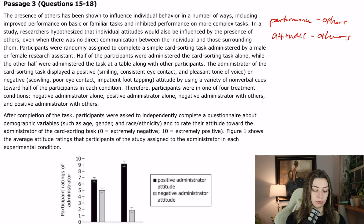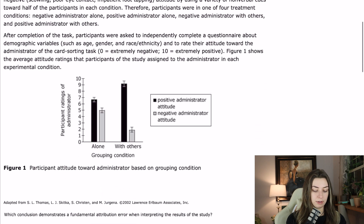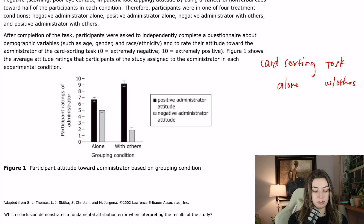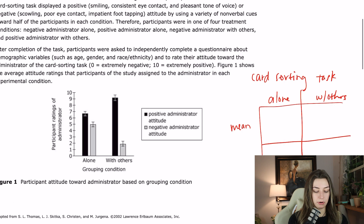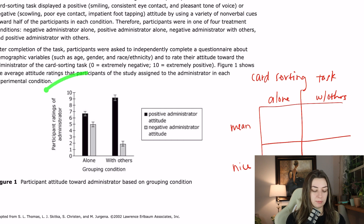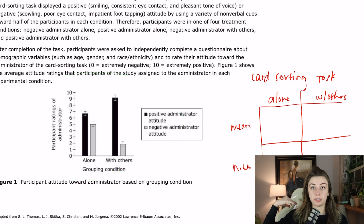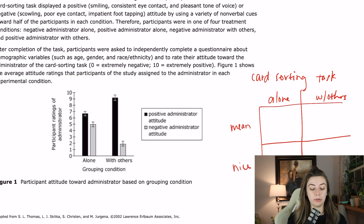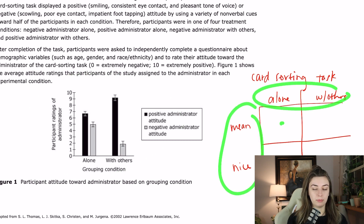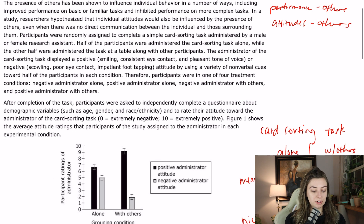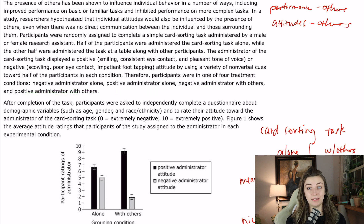So we have a classic four-group kind of thing going on. I'm going to draw it out. One variable is whether they are alone or with others, and then another variable is whether the person — the administrator — is mean or nice. Therefore, participants were in one of four treatment conditions: negative administrator alone, positive administrator alone, negative administrator with others, or positive administrator with others. So they laid it out for you — I really did not have to draw this thing.